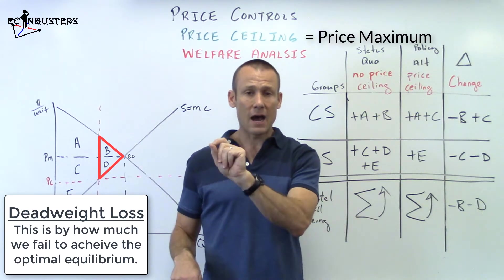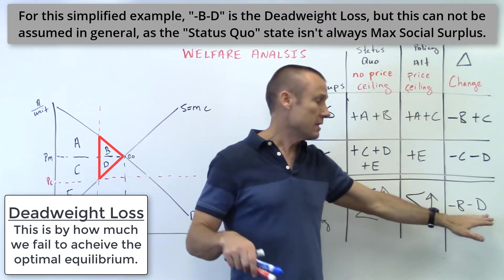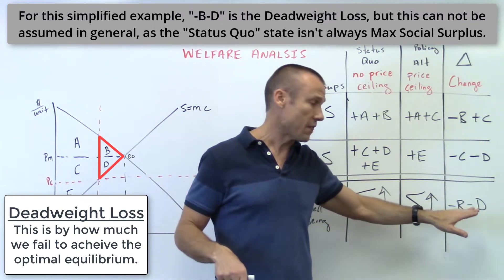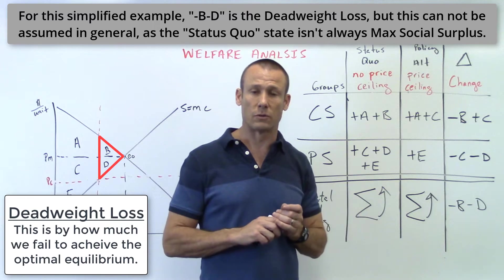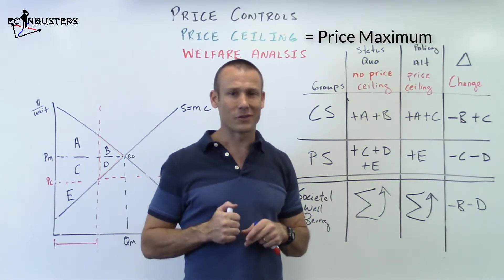So just to recap so that we get all the nuance here, minus B minus D is no matter what the amount that the policy alternative is worse than the status quo as far as the welfare analysis shows us. Now, on top of that, we will often refer to that as deadweight loss. There's some complexities why it might not be. And when we call it deadweight loss, we're saying, hey, that's the amount we fall short of max social surplus. Anyhow, hope all that made sense to you. Thanks for tuning in. We'll see you in the next video.